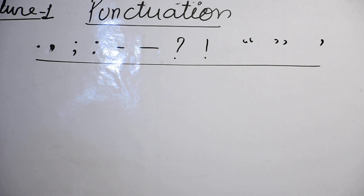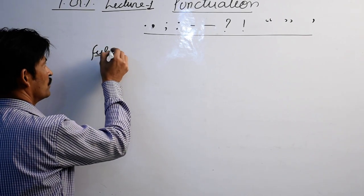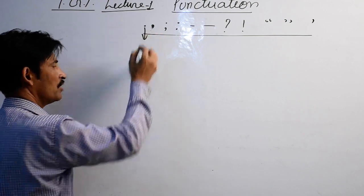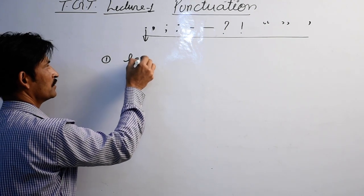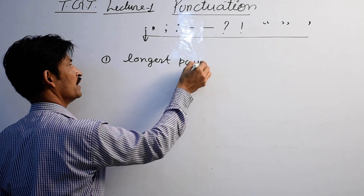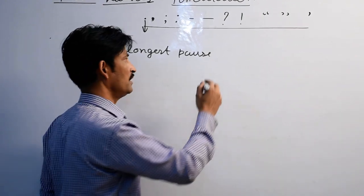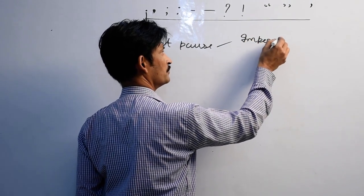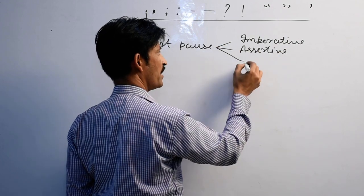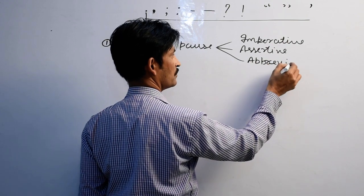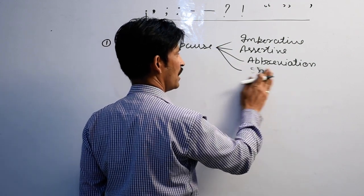They have a very big role in giving you marks. So let's start without wasting any moment. First of all, we will take the full stop. The full stop is always used in three things. It is the longest pause — pause means stop. So when you end a long sentence, you take a full stop. It comes in imperative sentences, assertive sentences, and abbreviations. It does not come from acronyms, but it does come in short forms.